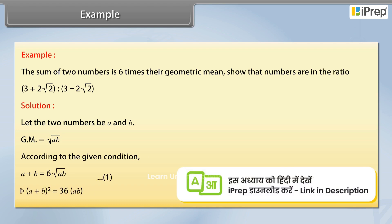This implies (a plus b) squared equals 36ab.